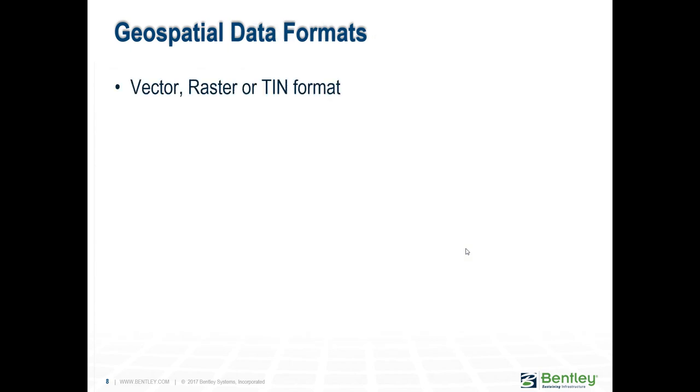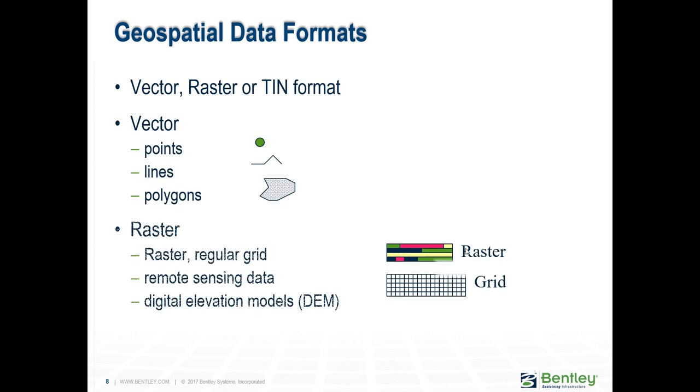Okay, so geospatial data comes in different flavors. The formats that you typically find are vector, raster, or tin. Vector could be a point, line, or polygon. Raster looks like that. Grids, things like digital elevation models fall in that category. Or it could be tin formats, which are triangulated irregular networks, typically representing surface data.